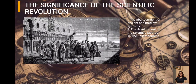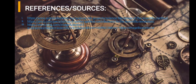The significance of the scientific revolution was the abandonment of ancient and medieval systems. Scientific revolution was built upon the foundation of ancient Greek learning and science in the Middle Ages. This is the end of our presentation, and here are the links to our references for this topic.